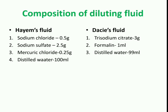We normally use two kinds of diluting fluid: it may be Hayem's fluid or Dacie's fluid. The composition of Hayem's fluid includes sodium chloride, sodium sulfate, mercuric chloride, and distilled water. Whereas Dacie's fluid contains trisodium citrate, formalin, and distilled water.